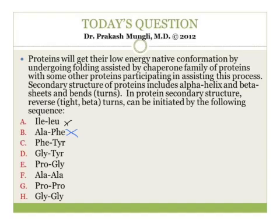Choice C is phenylalanine and tyrosine — both are aromatic amino acids. Phenylalanine is nonpolar aromatic and tyrosine is a polar uncharged aromatic amino acid; they also do not lead to bends and turns. Choice D is glycine and tyrosine. Glycine is the simplest amino acid and is commonly found in bends and turns, but it does not initiate them, so this is also not the correct choice.